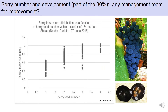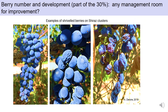Seed number is important for fruit volume, but it is not a linear relationship — you can have the same berry fresh mass for berries having one, two, or three seeds. This demonstrates the important effect of other factors such as water, nitrogen, and cell numbers. From veraison onwards, the berry is loading sugar and water, and on a per-berry basis, the volume of the fruit will typically double from the onset of veraison up to the plateau of berry sugar accumulation.